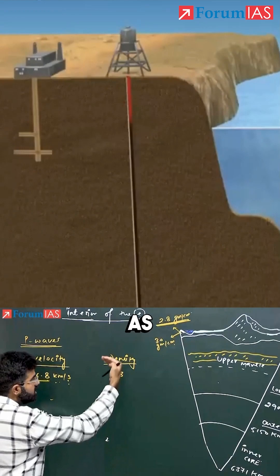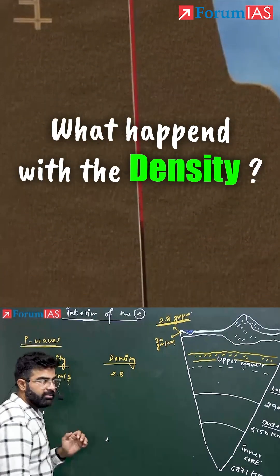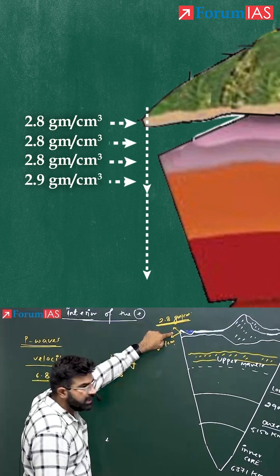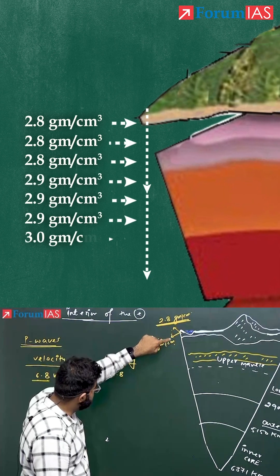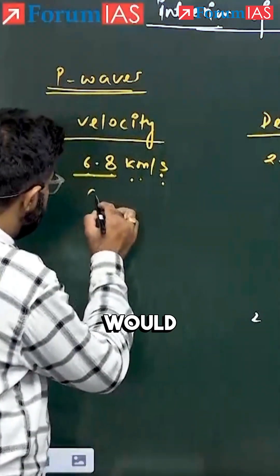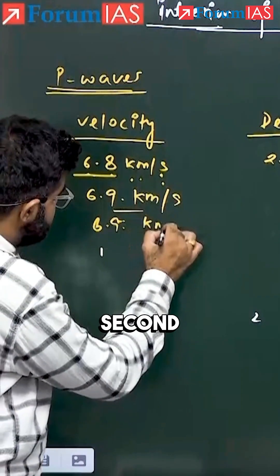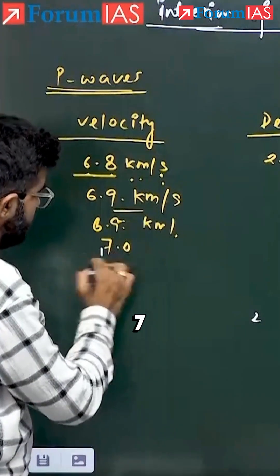So let's say after 2.8, it becomes 2.9, then 3.0. What happens is the same would be reflected by the speed of the P-wave. Let's say 6.9 kilometers per second, and then it becomes 7 kilometers per second. This is the indication that the density is increasing.